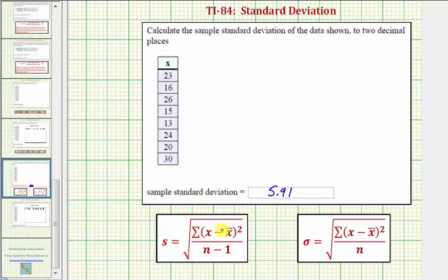Remember, for the sample standard deviation, the denominator of this fraction here is n minus one. And for the population standard deviation, it's just n.